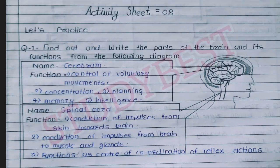Hello friends, welcome to my channel Study Best. This video is about Activity 7 from the parents science bridge course. We had uploaded a previous video, and in this video we are doing Activity Sheet 8. Let's practice - the question is: find out and write the parts of the brain and its functions from the following diagram.